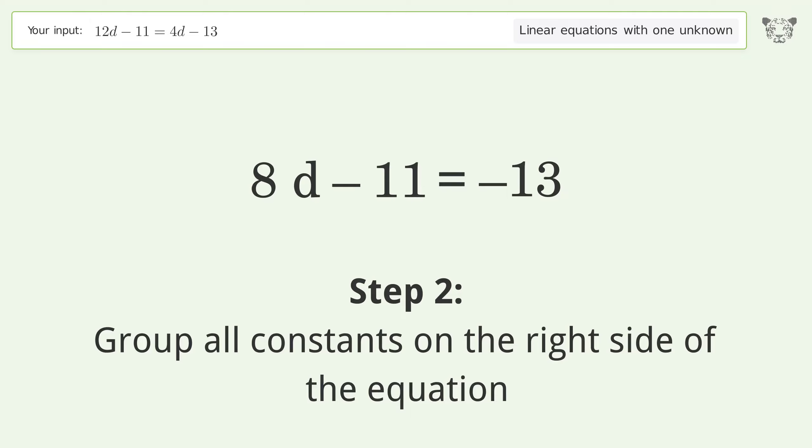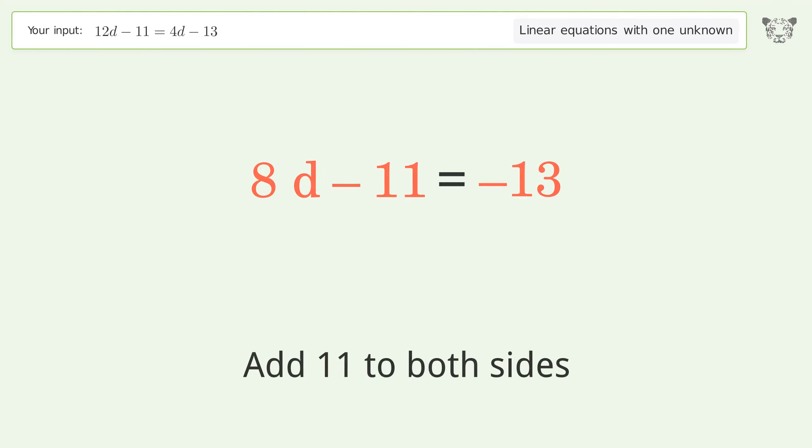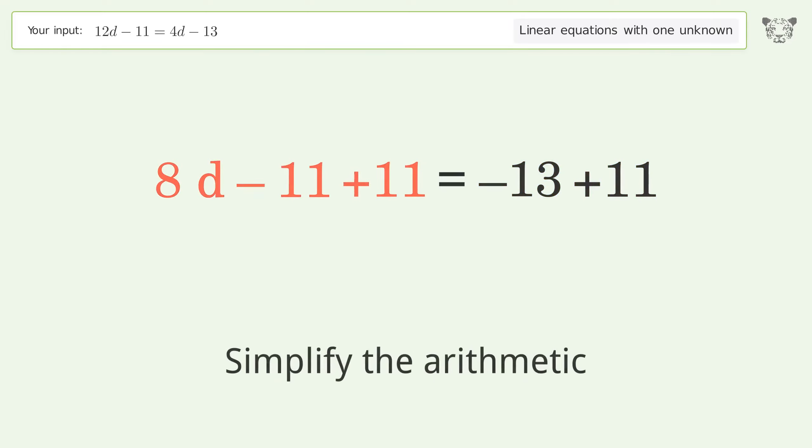Group all constants on the right side of the equation. Add 11 to both sides. Simplify the arithmetic.